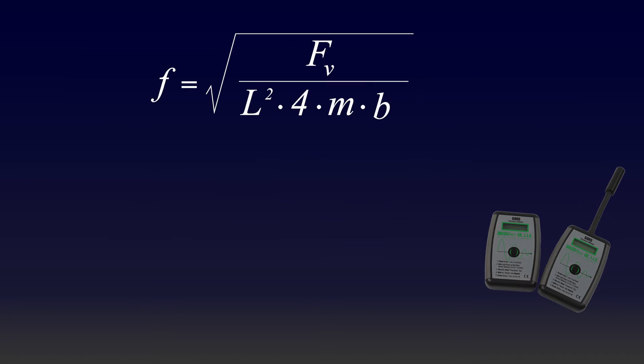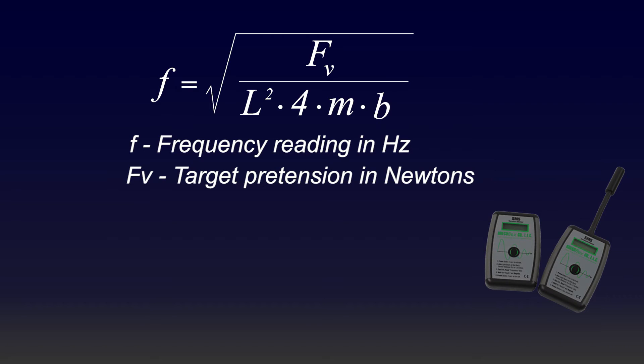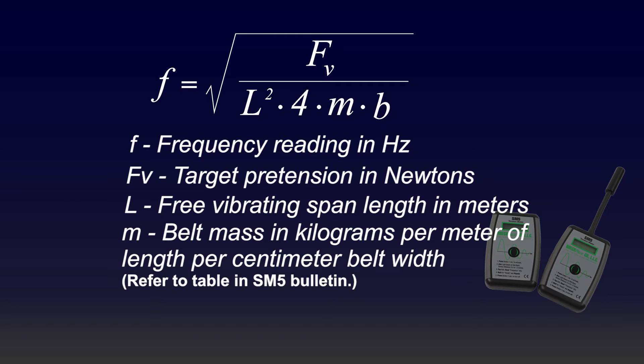In this equation, f is the frequency reading in Hertz. Fv is the target pretension in Newtons. L is the free vibrating span length in meters. m is the belt mass in kilograms per meter of belt length per centimeter of belt width. And b is the belt width in centimeters.